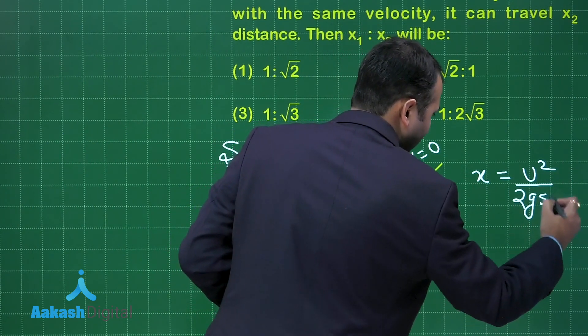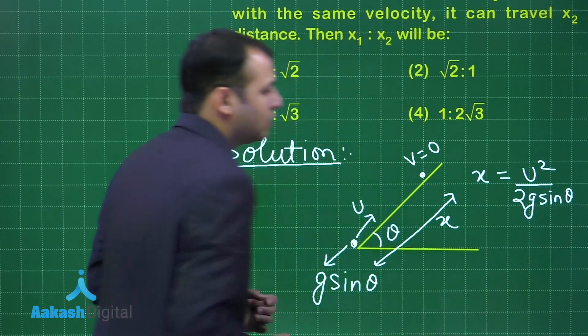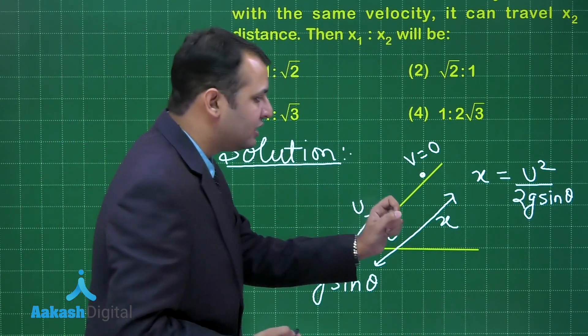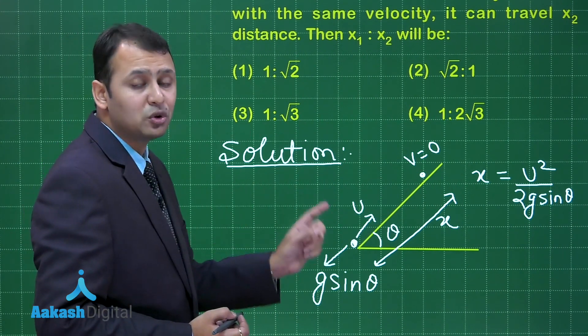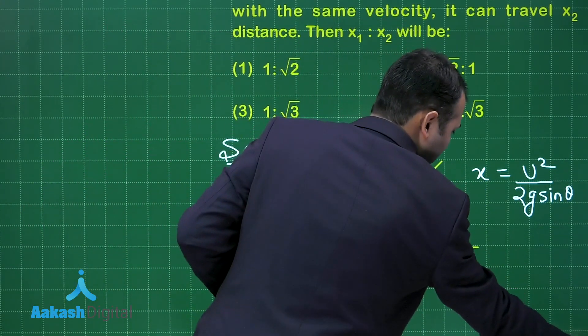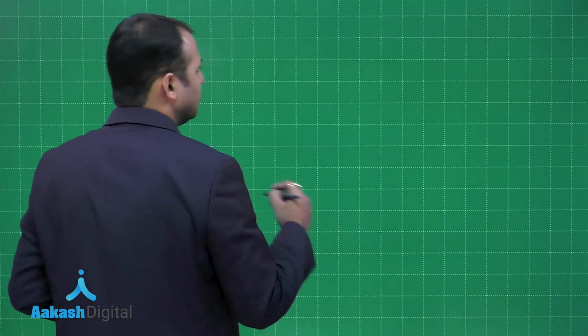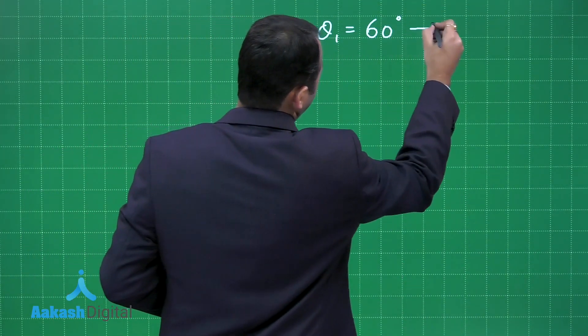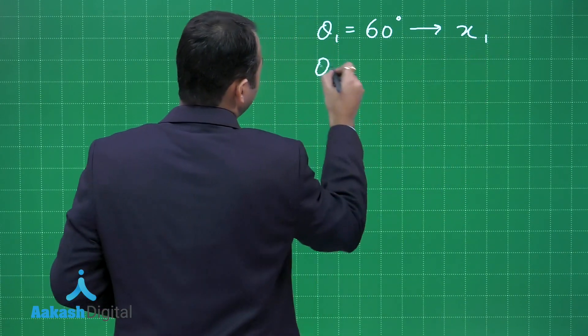Now similar pattern of question is here with θ₁ equals 60 degrees and θ₂ equals 30 degrees. So when you put the value of θ as 60, this question will become θ₁ equals 60 degrees at that time the distance was x₁. When θ₂ was 30 degrees at that time the distance was x₂.